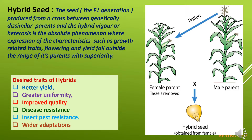We should understand what hybrid seed is. Hybrid seed is the seed of F1 generation produced by crossing A line and R line, which are genetically dissimilar parents. Hybrid vigor and heterosis is the absolute phenomenon in hybrid seed production. In hybrid seeds, characteristics like growth-related traits, flowering and yields show superiority over parents. Hybrids have better yield, greater uniformity, maturity and improved quality. In hybrid seed production there is selection of lines having disease resistance, insect resistance and wider adaptations.